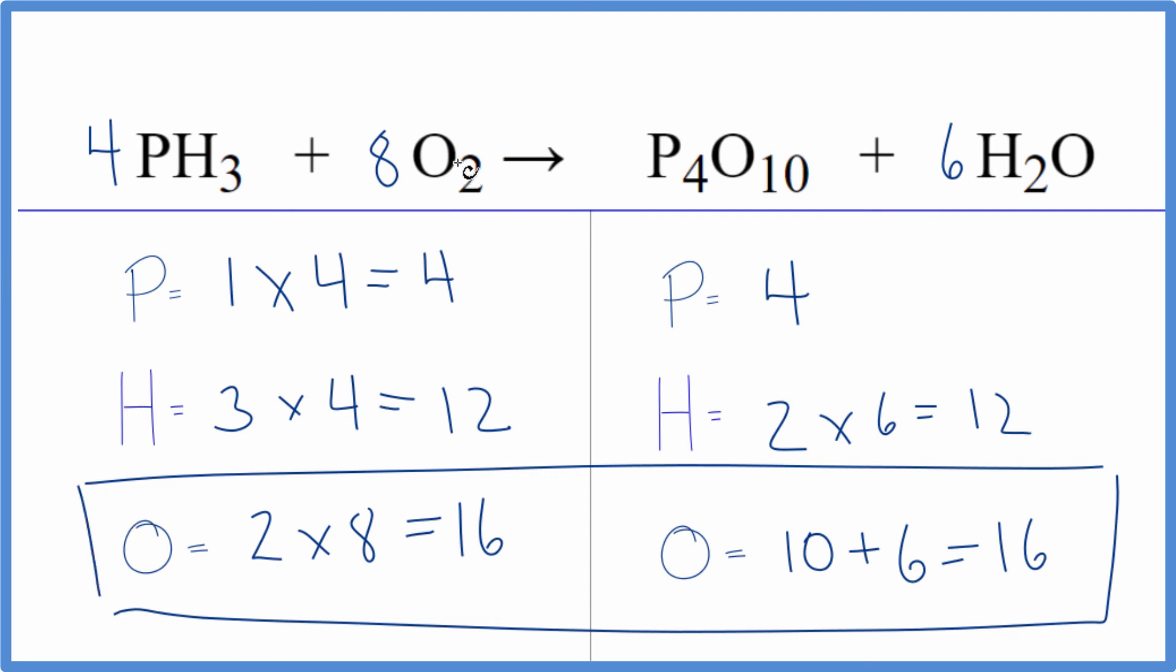Especially since this O2 is by itself, when we finally change this O2 here it won't change the phosphorus or the hydrogen atoms. This is Dr. B with the balanced equation for PH3 plus O2. Thanks for watching.